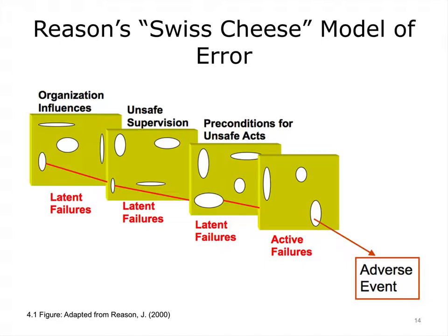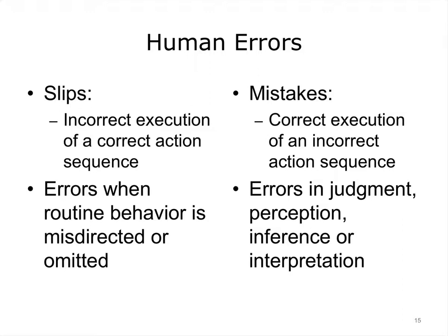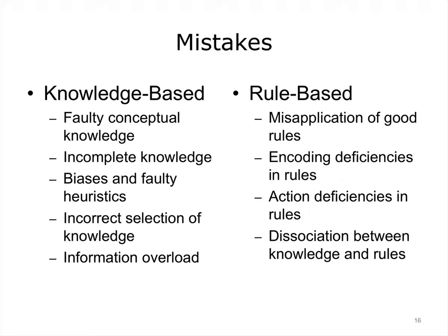We can distinguish between slips, in which the actor selected the appropriate course of action but it was executed inappropriately. In contrast, a mistake involves an inappropriate course of action reflecting an erroneous judgment or inference, such as a wrong diagnosis or misreading of an X-ray. Mistakes may be either knowledge-based, owing to factors such as incorrect knowledge, biases like confirmation bias, or overburdened working memory — or they may be rule-based, in which case the correct knowledge was available but there was a problem in applying the rules or guidelines. For example, misreading a problem may lead to the wrong selection of rules, which determines the treatment strategy.